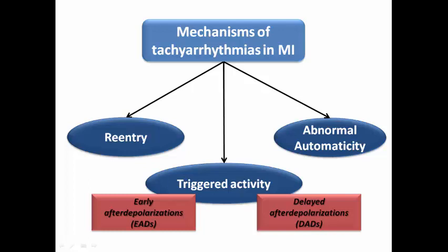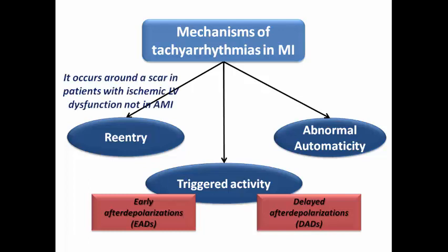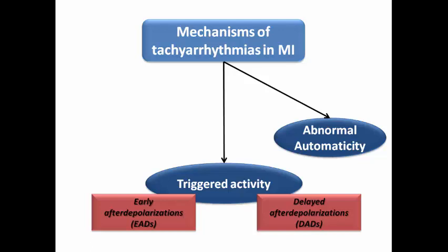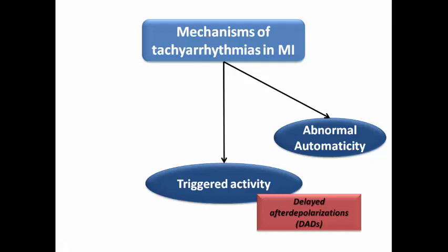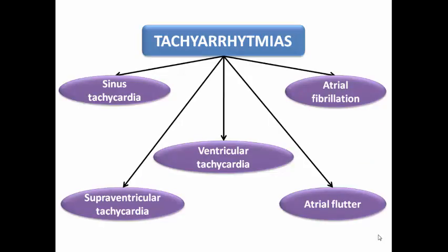Now applying these mechanisms to acute coronary syndrome or myocardial infarction: arrhythmias are much more common in MI than in unstable angina. Re-entry usually occurs around the scar in ischemic LV dysfunction — not commonly in acute MI. Early afterdepolarizations are also not very common in acute MI. The two most relevant mechanisms are delayed afterdepolarizations and abnormal automaticity, explaining VT from ischemic or reperfusion injury.